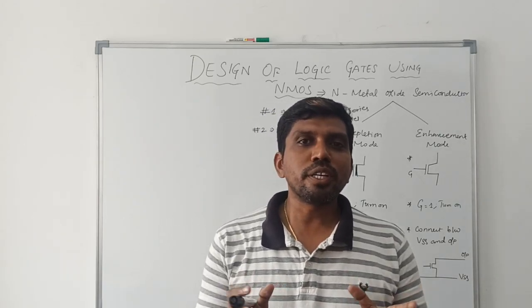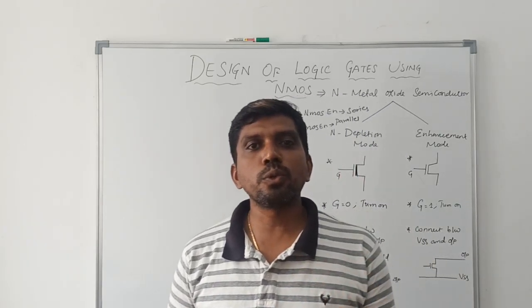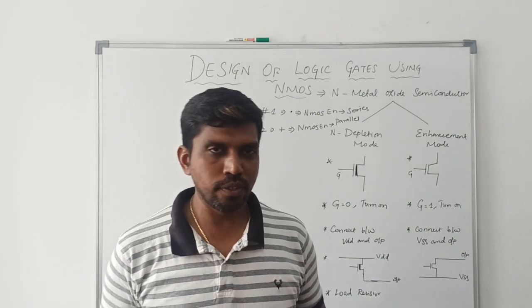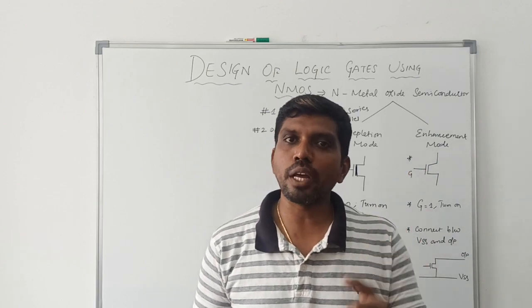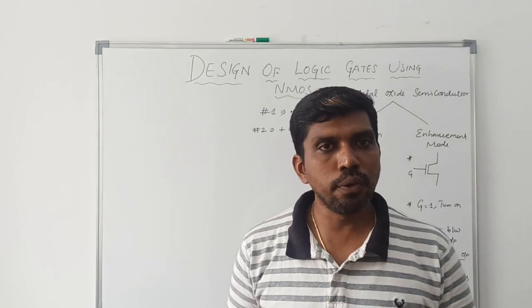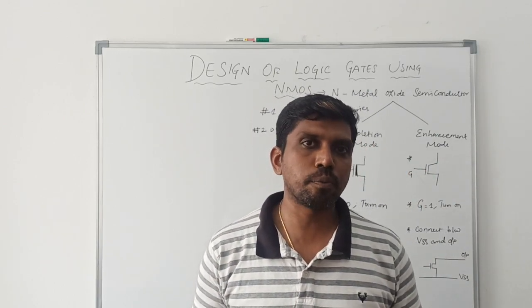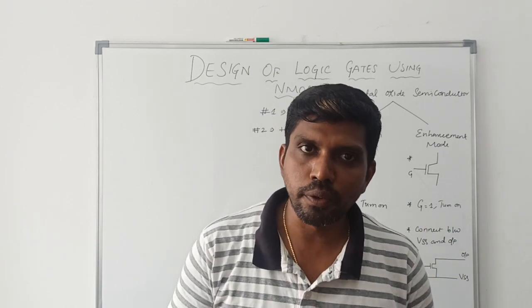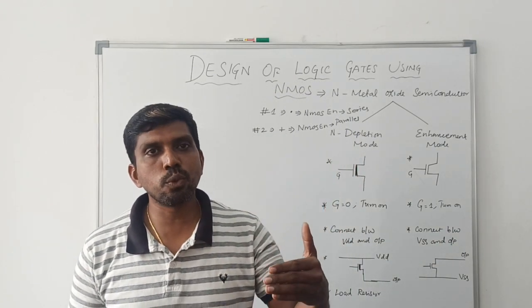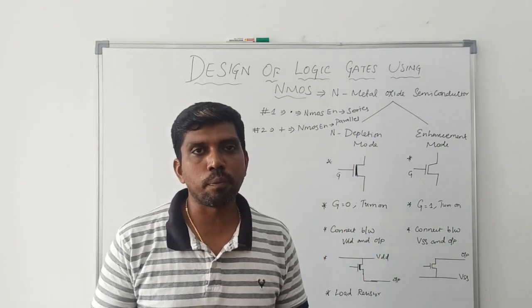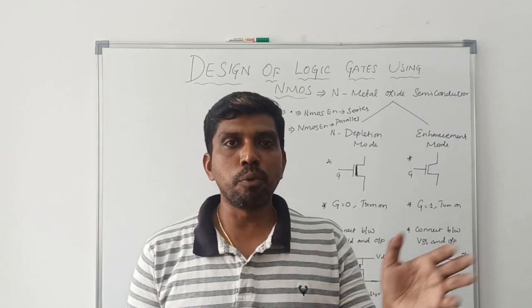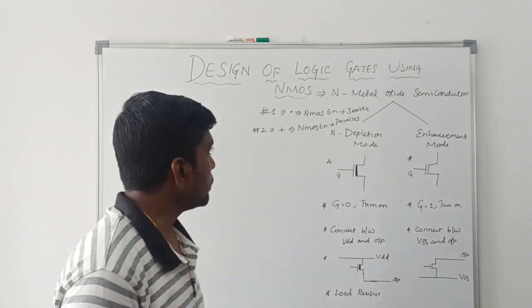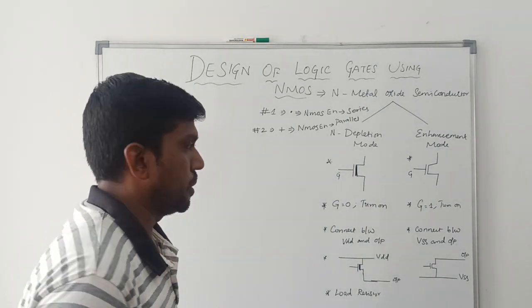Welcome back to our channel. Today's session I am going to discuss how to draw the NMOS logic circuit for universal gates. In universal gates we have two types: the first one is the NAND operation and another one is the NOR operation. Using these two gates we can create any logic gate operation and boolean expression, which is why they are called universal gates. Let me first draw the NAND operation.